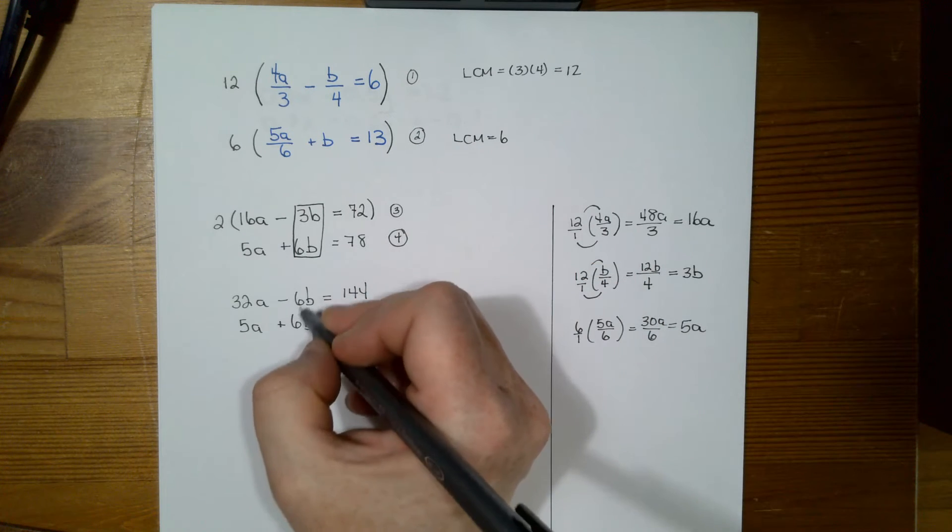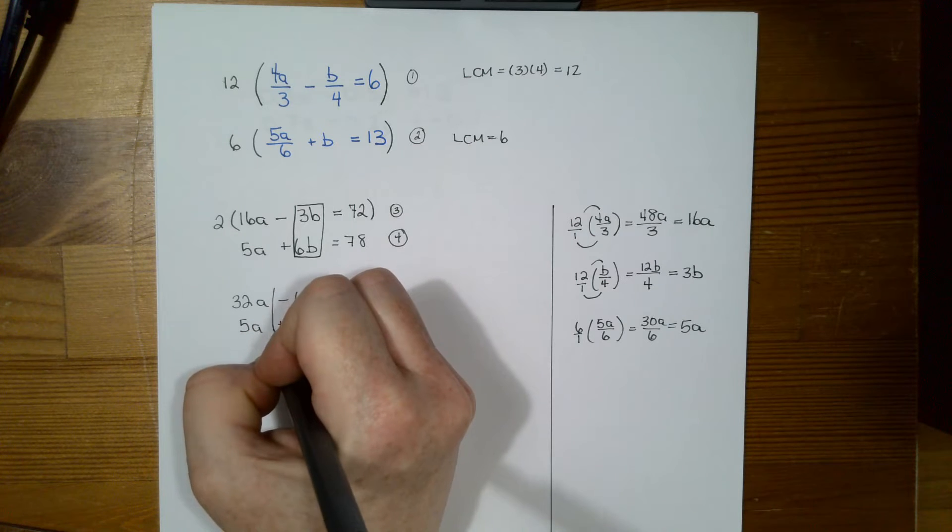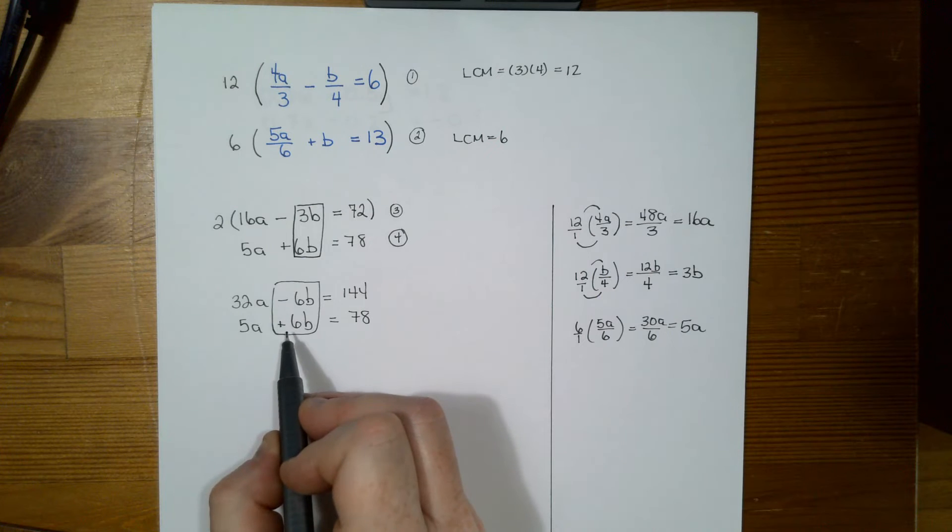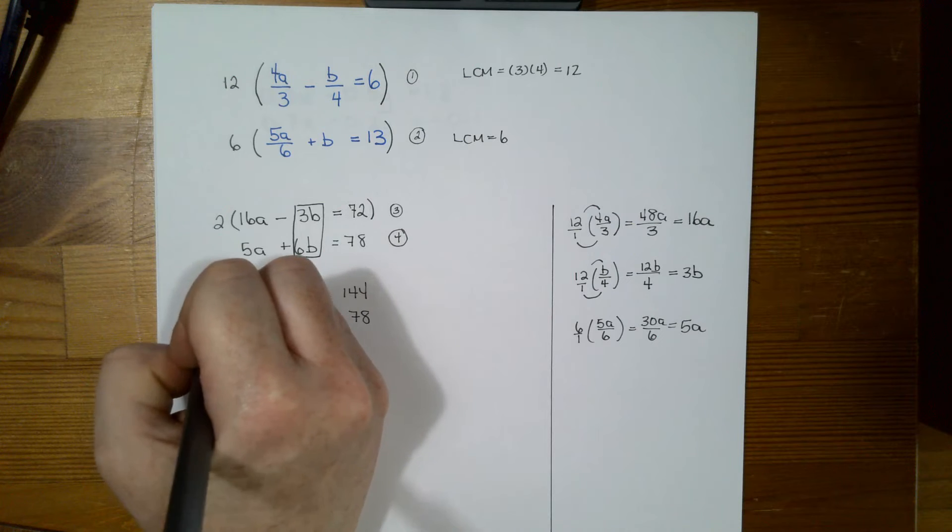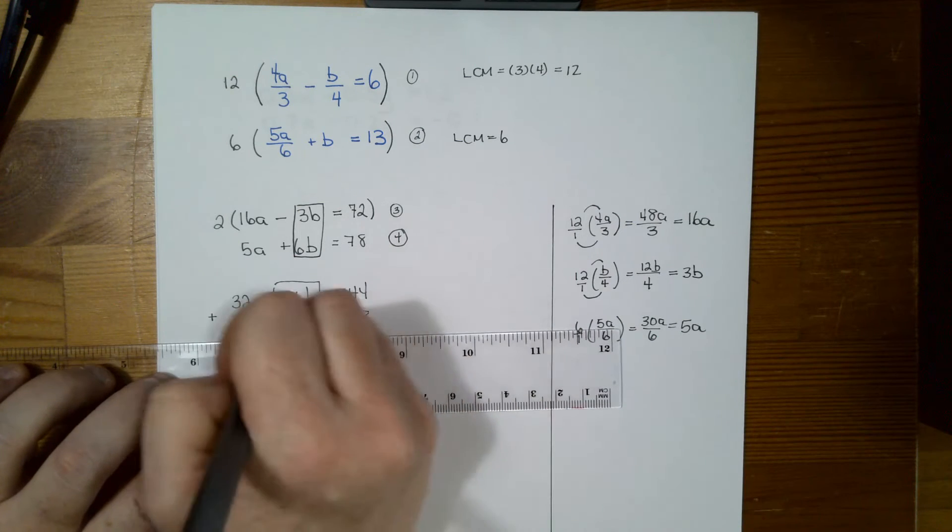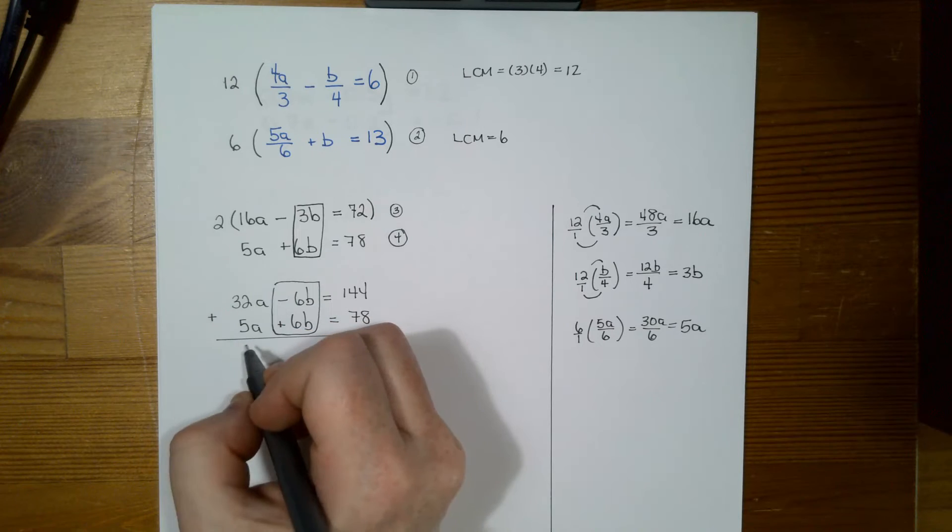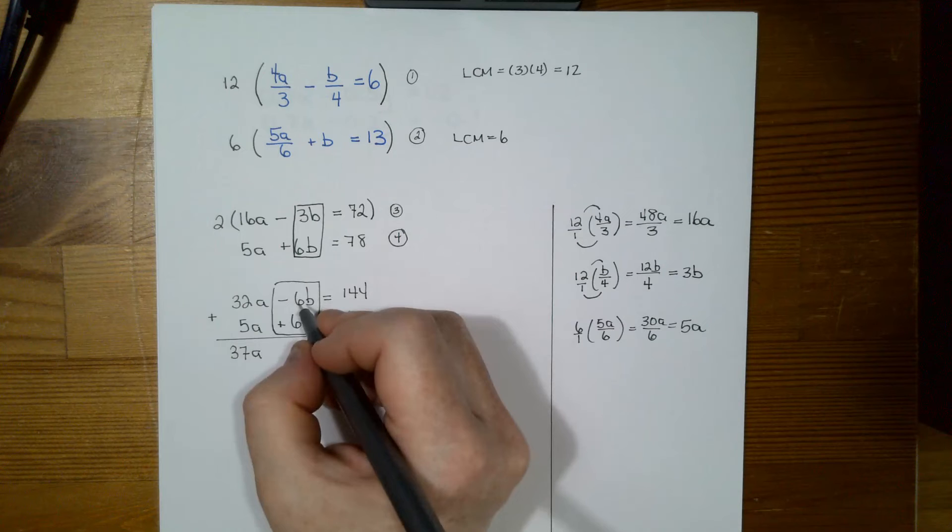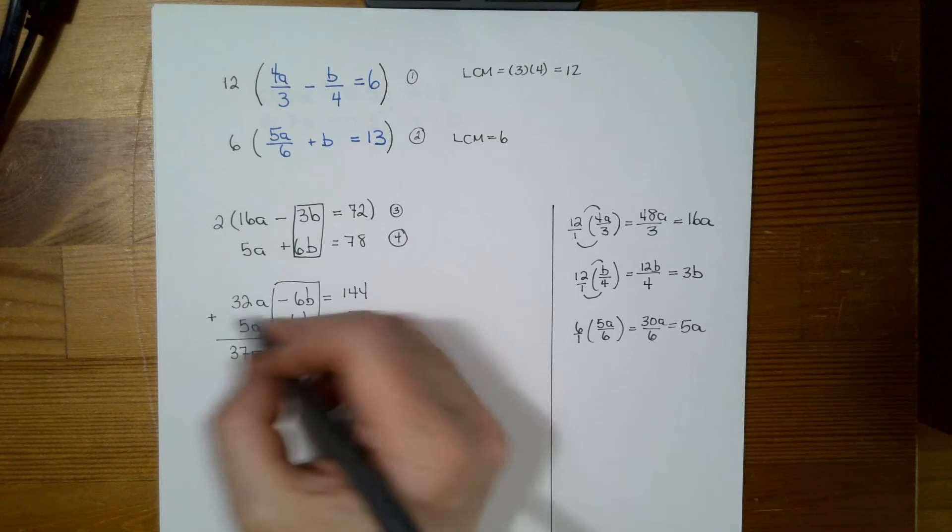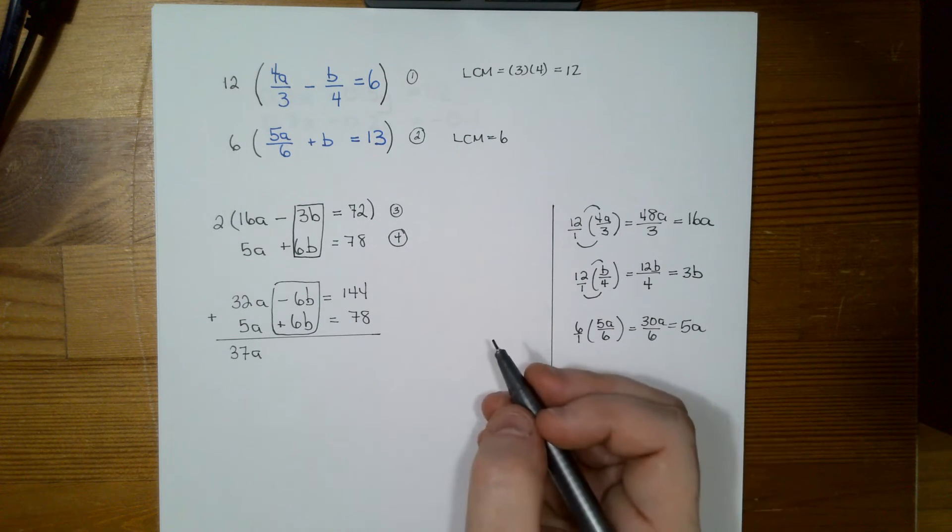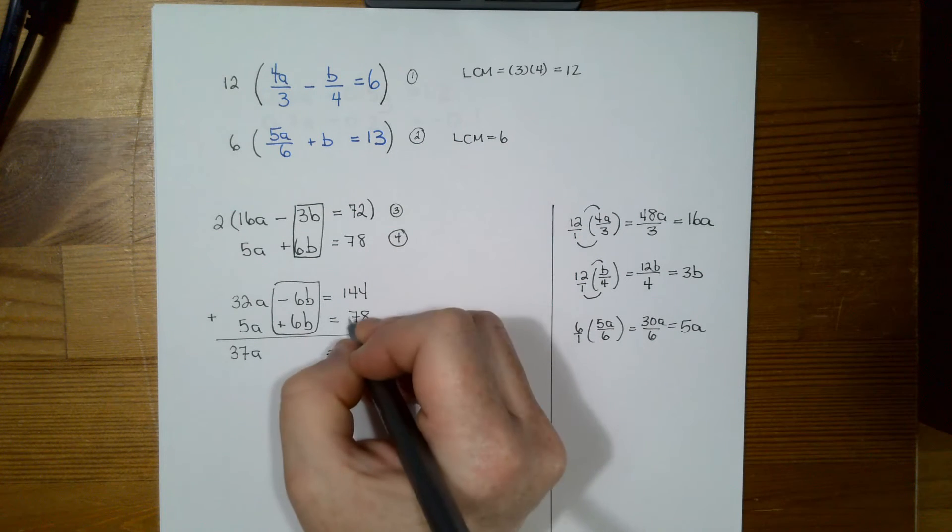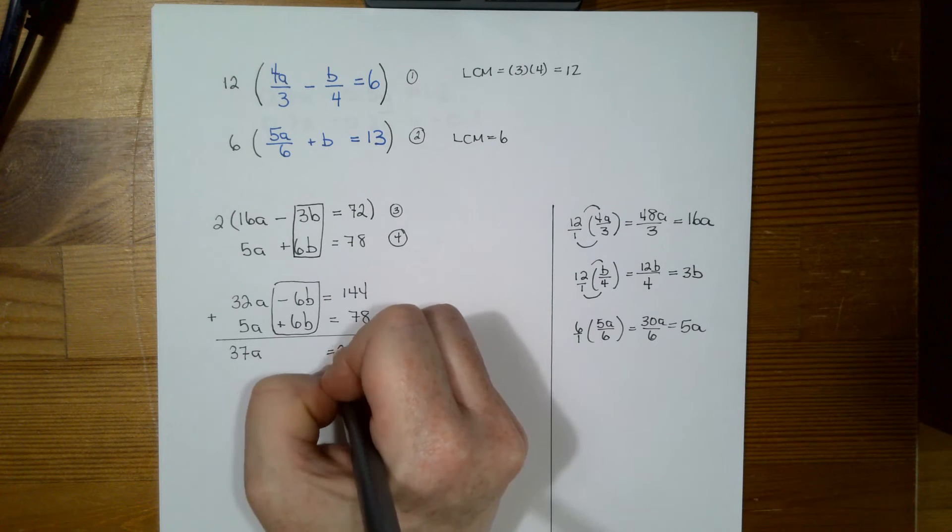So I'm eliminating the b's. That's the one I want to eliminate. So I'm just going to highlight it for you again. To eliminate it, I know I have one negative and one positive. So whenever I have a negative and a positive, to eliminate, I need to add. So I'm going to add all of these up. So 32a plus 5a is 37a. Negative 6b and positive 6b, when I add them up, that gets eliminated. And 144 plus 78 is 222.